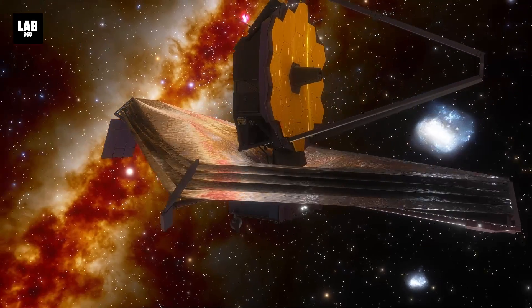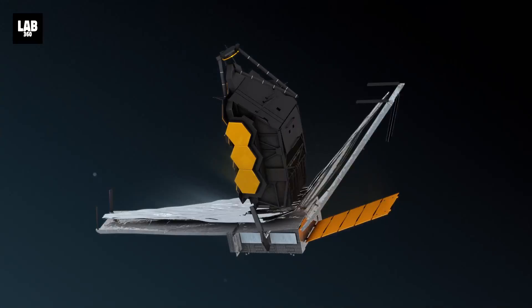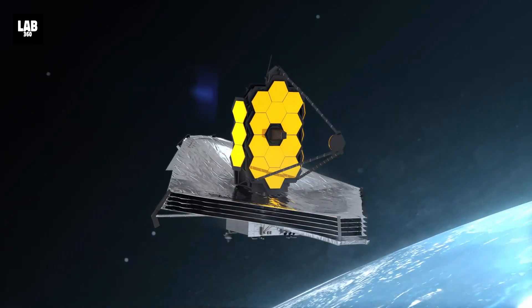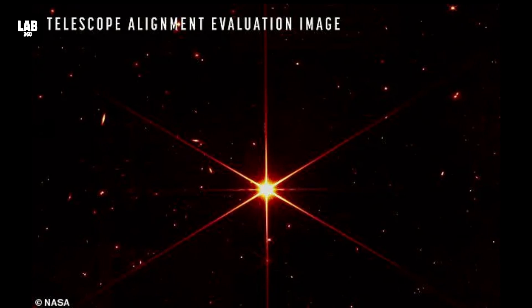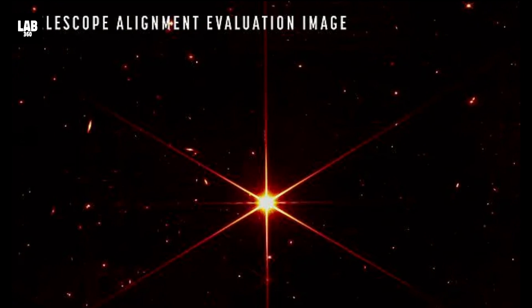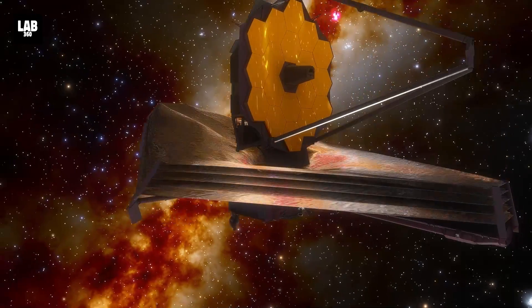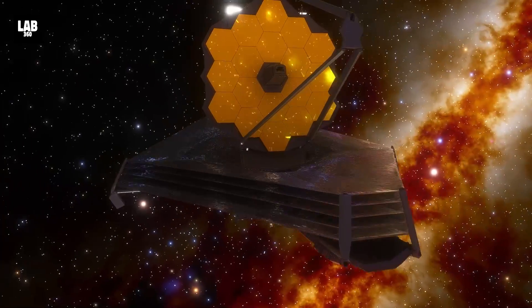Webb has imaged a lot of stars. Its first-ever test image taken post-alignment was of one boring star, HD 84406. I am not calling it boring, that's just what the astronomers called it. Webb has come a long, long way since that image was taken in March.